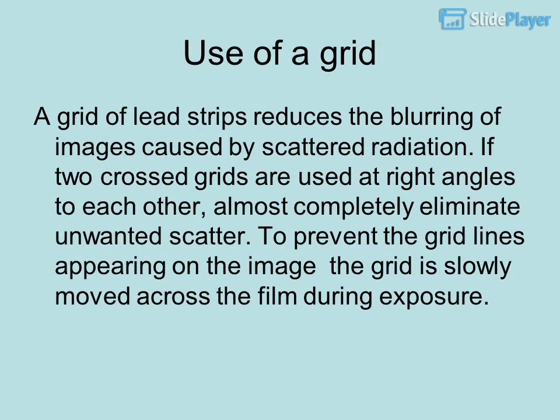Use of a grid: A grid of lead strips reduces the blurring of images caused by scattered radiation. If two crossed grids are used at right angles to each other, they almost completely eliminate unwanted scatter. To prevent the grid lines appearing on the image, the grid is slowly moved across the film during exposure.